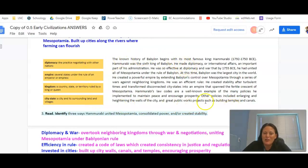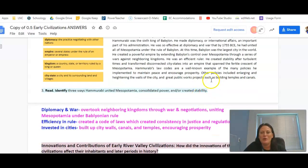The last section was a reading passage and it wanted you to identify three ways Hammurabi united Mesopotamia. If you read this paragraph right here, it says that he united all of Mesopotamia under the rule of Babylon. Babylon was the largest city in the world. He created a powerful empire by extending Babylon's control over Mesopotamia through a series of wars against neighboring kingdoms, so military conquest is one way that he was able to create or maintain power. He was also an efficient ruler. He created stability after a turbulent time and transformed disconnected city-states into an empire that spanned the Fertile Crescent of Mesopotamia. He also had things - I'm sure you've heard of Hammurabi's Law Code, which is like the first written law code, and we know that this is something that we need in order to maintain peace and calm the chaos of everybody that's living all in one area.